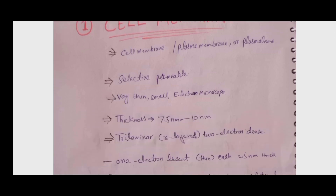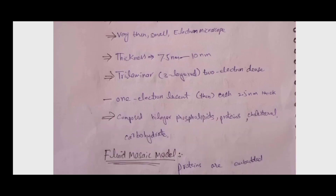The cell membrane is very thin and small; we can only use an electron microscope to visualize its structure. Its thickness is about 7.5 to 10 nanometers. It has three laminar layers known as the trilaminar structure, with two electron-dense outer layers and one inner electron-lucent, very thin layer. Each layer is composed of 2.5 nanometers.